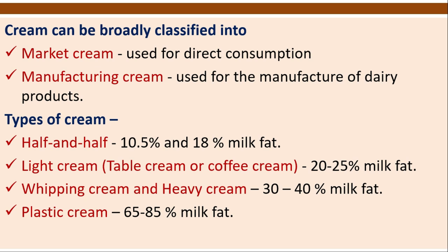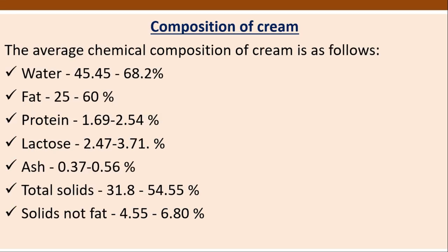The types of cream include: half and half, containing 10.5% to 18% milk fat; light cream, also called table cream or coffee cream, containing 20% to 25% milk fat; whipping cream and heavy cream containing 30% to 40% milk fat; and plastic cream containing 65% to 85% milk fat.